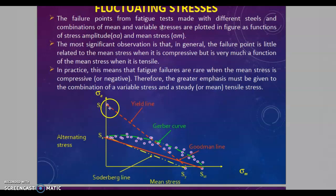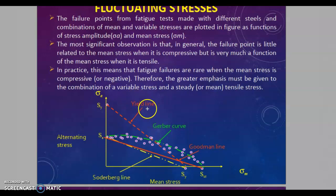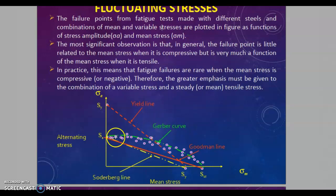The area below the yield line will be safe — this is the theory of the yield line. Another theory is the Gerber curve. The green curve in the graph is the Gerber curve.